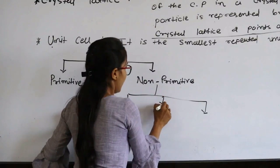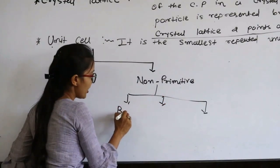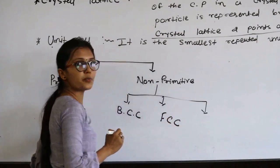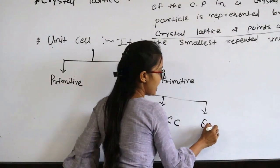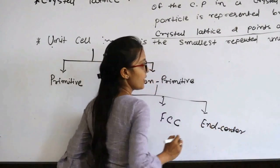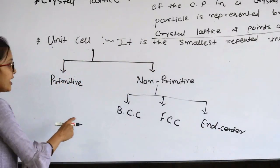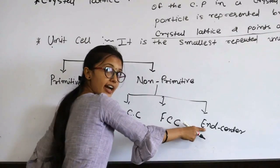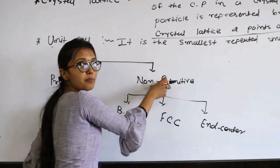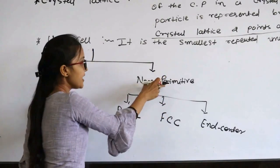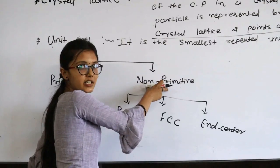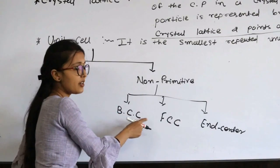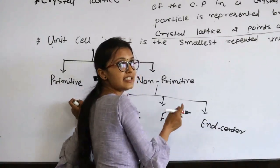The primitive unit cell is also known as the Bravais lattice. The non-primitive unit cell has three types: the first is Body-Centered Cubic (BCC), the second is Face-Centered Cubic (FCC), and the third is the End-Centered unit cell. These are the three types of non-primitive unit cells, all of which are centered unit cells.